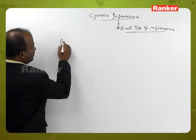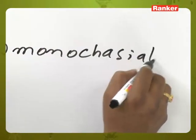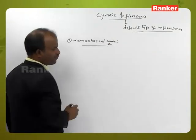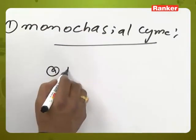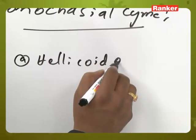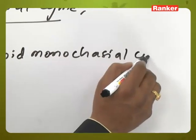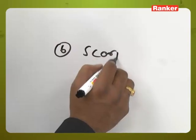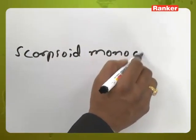Next is monochasial cyme. In monochasial cyme there are two types: helicoid monochasial cyme and scorpioid monochasial cyme.